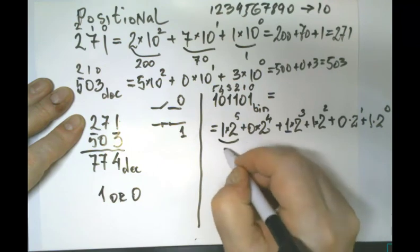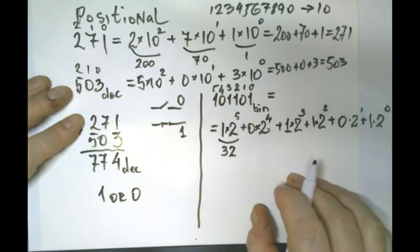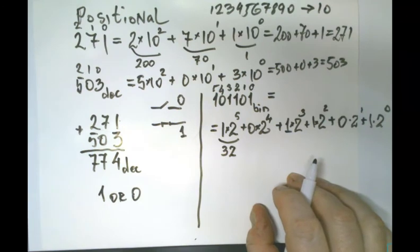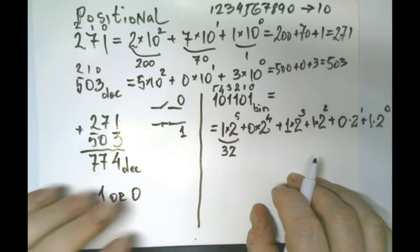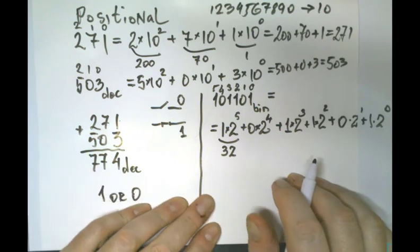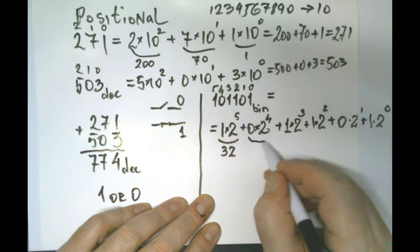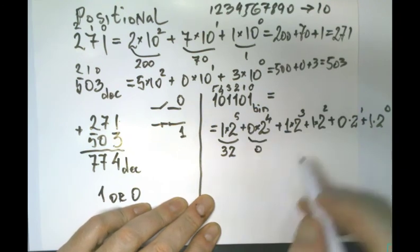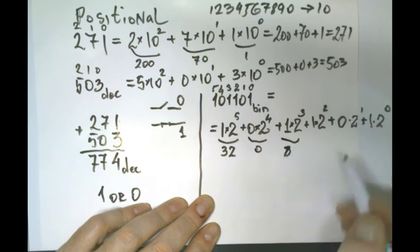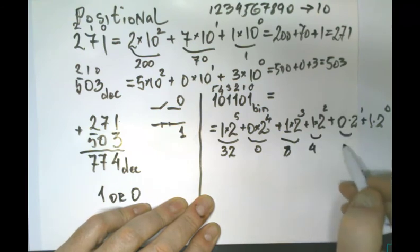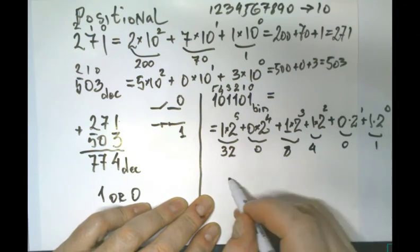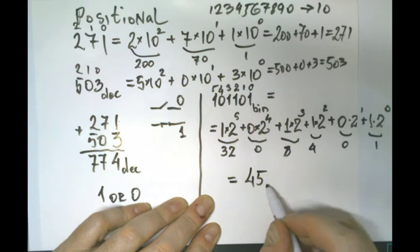Now we calculate: 2⁵ = 32 — how do I know? Two by two is four, by two is eight, by two is sixteen, by two is thirty-two — five times we multiplied. Then zero (because multiplied by zero), then 2³ = 8, then 2² = 4, then zero, then 2⁰ = 1. The result will be 32 + 8 + 4 + 1 = 45 decimal.